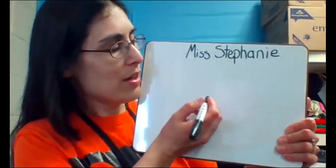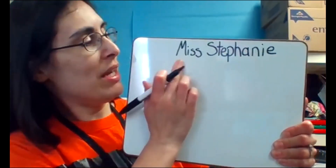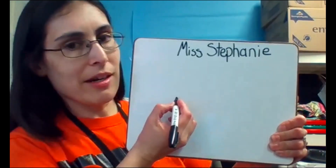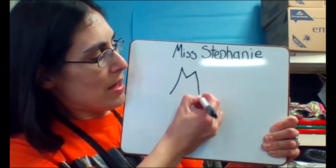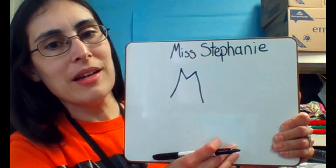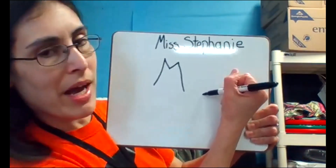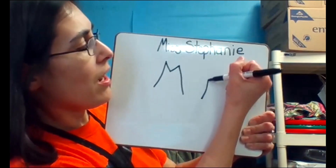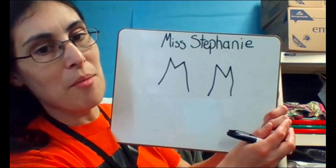Let's go ahead and write our letter M. Here's our letter M for today. We're gonna start down here. I have a letter M in my name. We're gonna start at the bottom and go up, down, up, down, M. Let's try that again — start at the bottom, up, down, up, down, M.